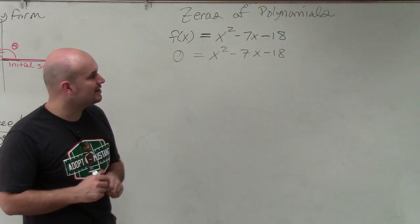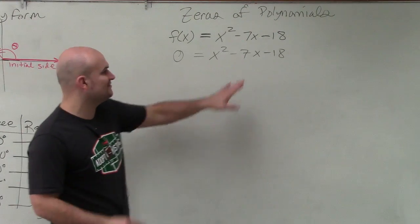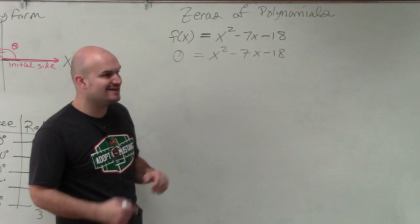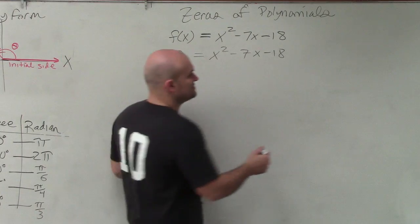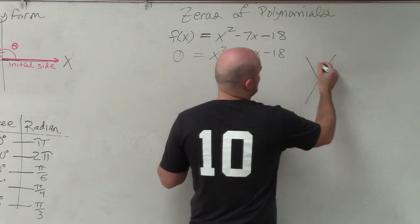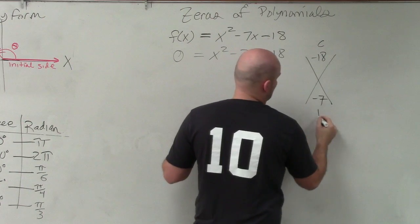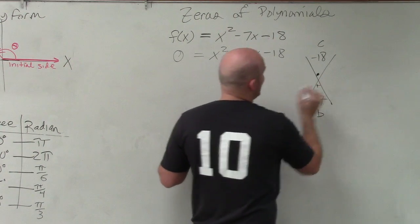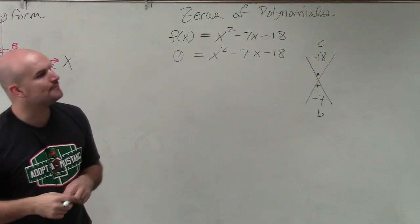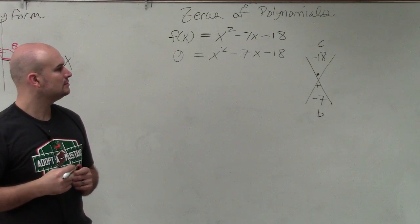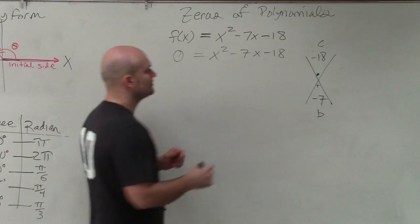Then the next thing that we want to do is now factor. We're trying to identify what two numbers multiply to give me negative 18, but then add to give me negative 7. If you guys remember, I told you to use this diamond method, what two numbers multiply to give you negative 18, and then add to give you negative 7. Yes, Joshua. Negative 9 and positive 2.